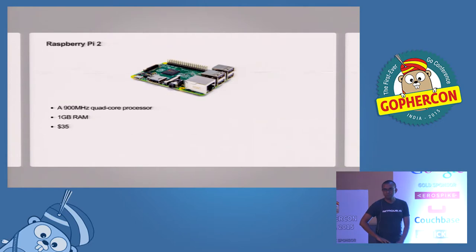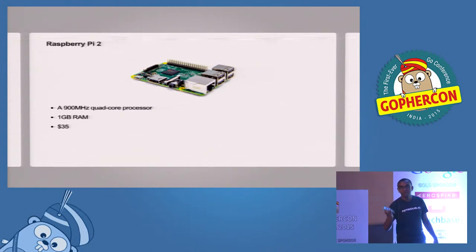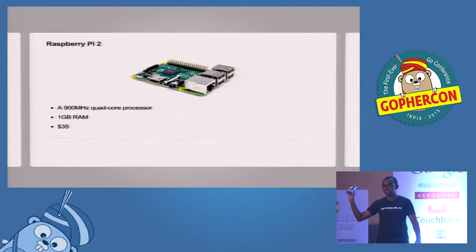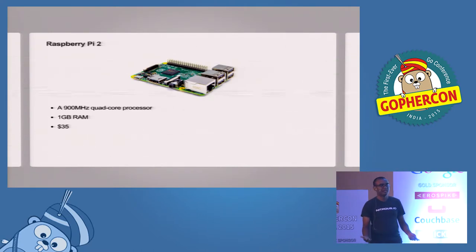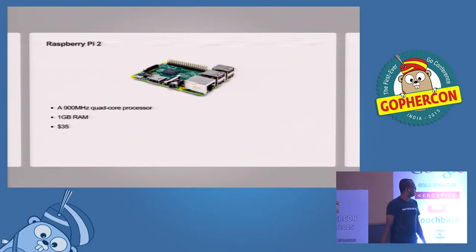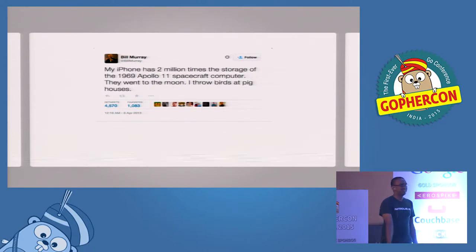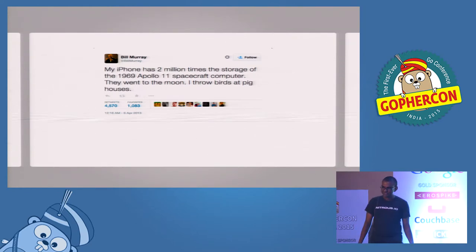Today I have this in my pocket — the new Raspberry Pi 2. It has 900 megahertz processing with four cores, and one GB of RAM. And it costs 35 bucks. It's crazy how technology has evolved and how cheap it is to get really fast computing at our disposal. Sadly, we put a man on the moon with four kilobytes of RAM, and now we have this quad-core processor — and there's a famous Bill Murray tweet saying we have two million times the storage on our iPhones and this is what we're doing with it.